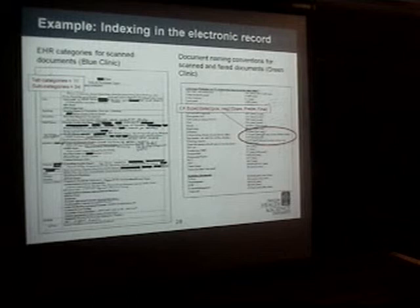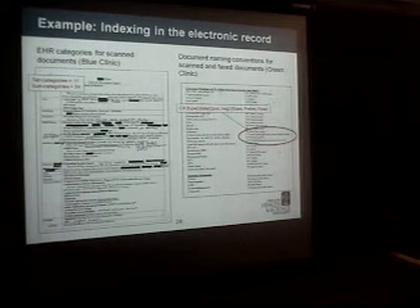Naming is also important — a short label on an electronic document shows up in document lists and trees. Green Clinic had a formal naming procedure: type of document, date, positive or negative result, and so on. When a provider or MA saw that in a list, they knew not only what it was but had an idea of what it meant. This is a human adding metadata to a document to make it easier to find — a neat idea.